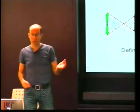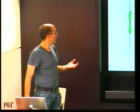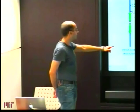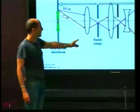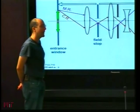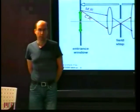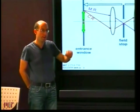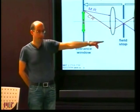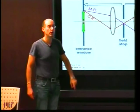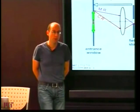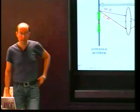Similarly to the entrance and exit pupils for the aperture stop, we can define equivalent quantities for the field stop, but we call them windows. If we image the field stop through the preceding elements, we get the entrance window; through the succeeding elements, we get the exit window. Generally in an optical system, the entrance window should coincide with the object plane and the exit window with the image plane — if that is not the case, something is wrong with the optical system.